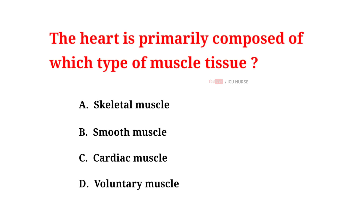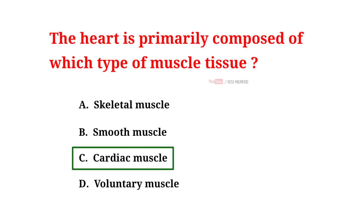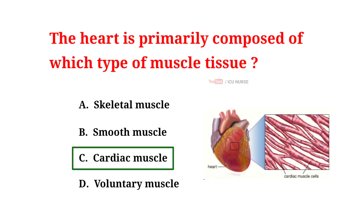The heart is primarily composed of which type of muscle tissue? A. Skeletal muscle. B. Smooth muscle. C. Cardiac muscle. D. Voluntary muscle. And the correct answer is C. Cardiac muscle. The heart is primarily composed of cardiac muscle tissue.